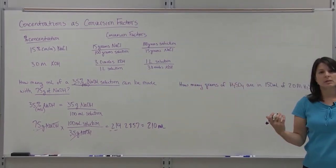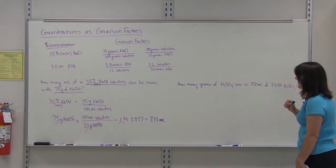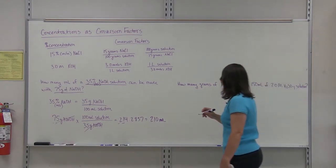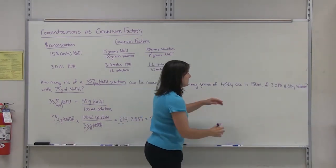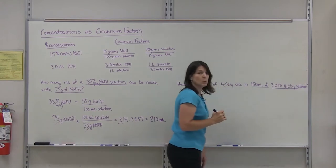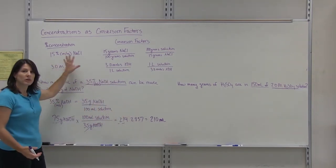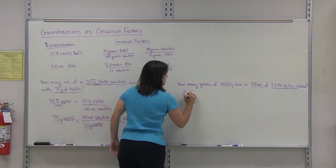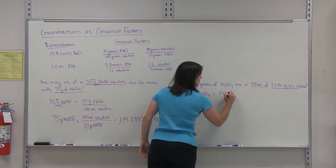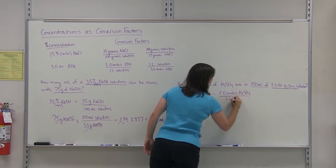Likewise, we can use molarity as a conversion factor as well. This question states: how many grams of sulfuric acid are in 150 milliliters of a 2 molar sulfuric acid solution? First step — evaluate your numbers. You have 150 milliliters of your solution, and the solution is 2 molar. Anything that's a concentration, go ahead and write as a fraction. So 2.0 molar H₂SO₄ means that you have 2 moles of H₂SO₄ in every one liter of your solution.